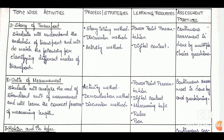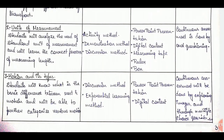Here is our sample unit plan. In the topic-wise activities, we write the activity we are going to use for a particular topic — we mention the topic at the top, then the activity we will employ to explain that topic. Next is the process being employed: it can be activity method, discussion method, demonstration method, experimentation method, or anything. Then our learning resource — whatever we are going to use in class for that activity — and then the assessment practice, describing how we will assess students' understanding of that particular topic. This set of entries is for one topic; for the next topic, we again write the activity, strategies, resources, and assessment tools to be used.